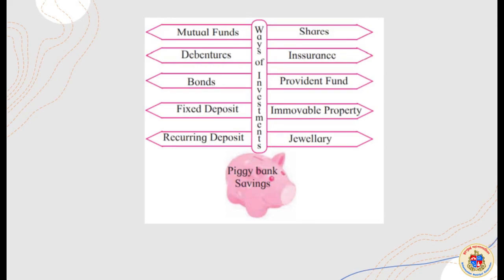From here the chapter changes its mode — we move from GST to the topic of investments. You can pause the video or refer to textbook exercise 4.23. This next section is about investments including mutual funds, debentures, bonds, fixed deposits, recurring deposits, shares, insurance, provident fund, immovable property, and jewelry.